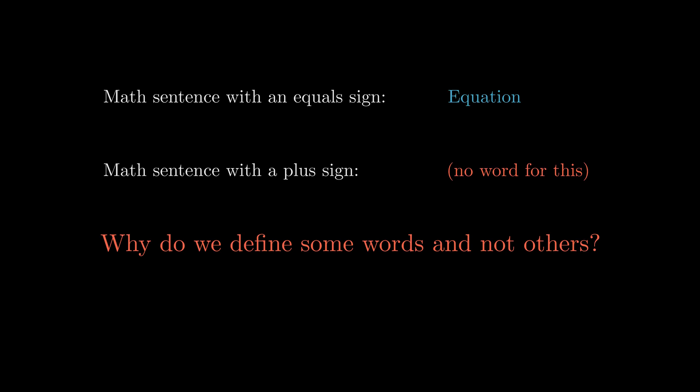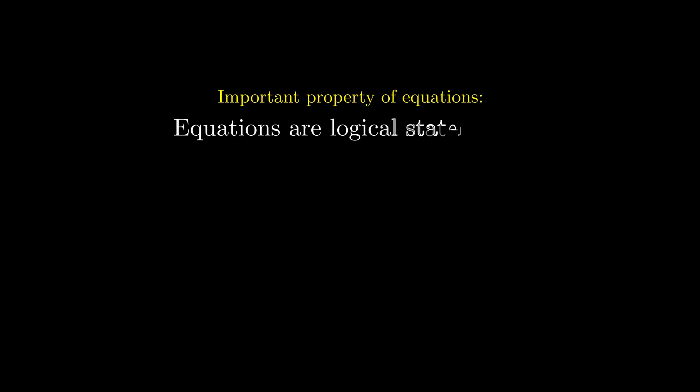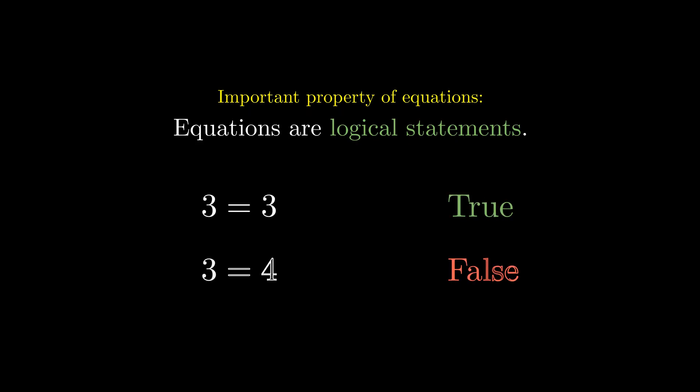Here is the secret sauce. Equations are logical statements, meaning that they can be true or false. For example, 3 equals 3 is true, but 3 equals 4? False. Just because an equation is false doesn't mean it's not an equation, as it still has an equal sign in it.